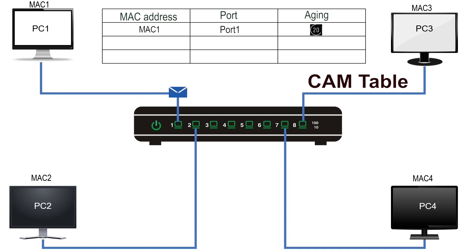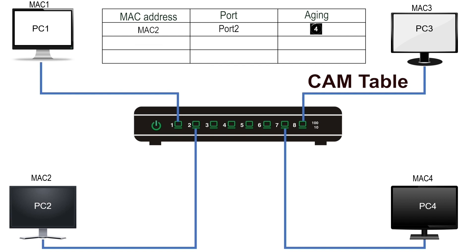When a switch receives a frame, it finds the frame's source address in the CAM table. If it finds an entry for the source address, it resets the timer stored in the aging field. If it does not find an entry, it adds a new entry for the source address. If the switch finds an entry for the source MAC address with different port information, it assumes that the device has been relocated.